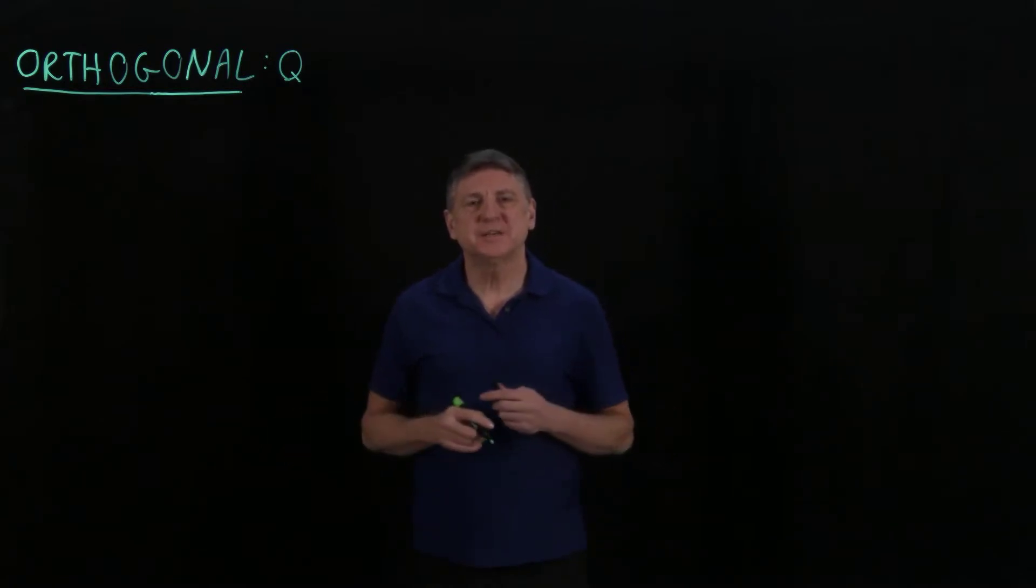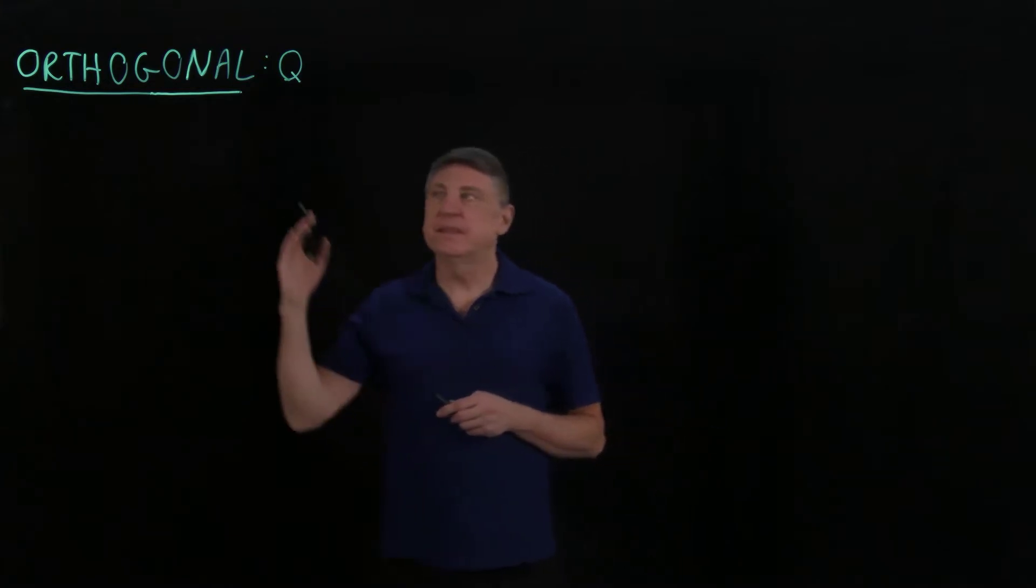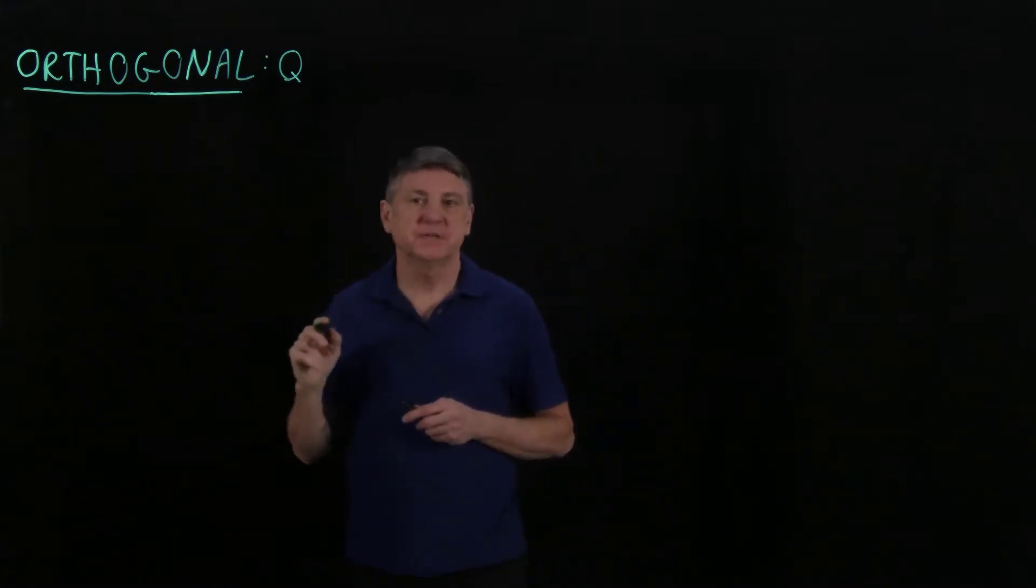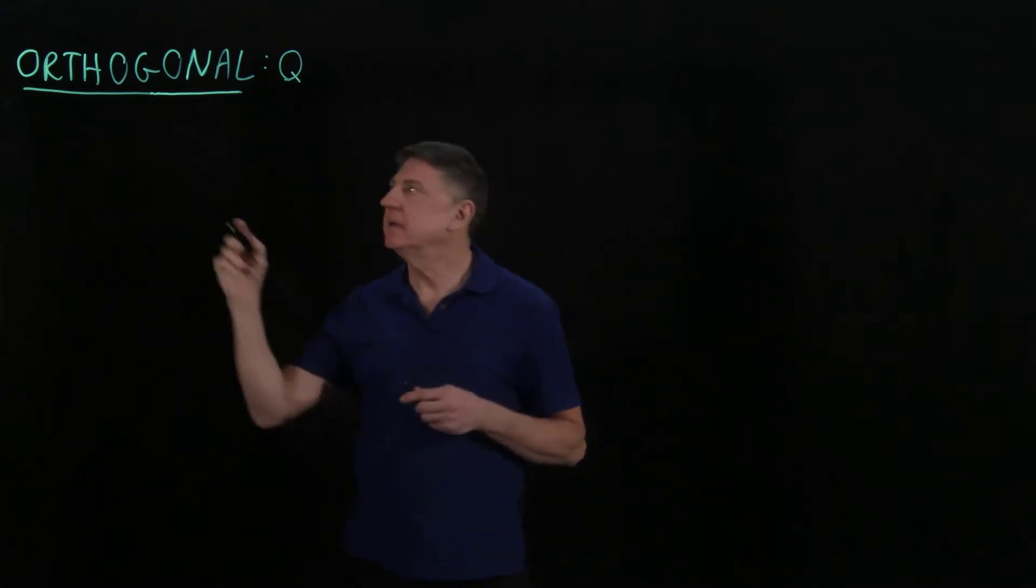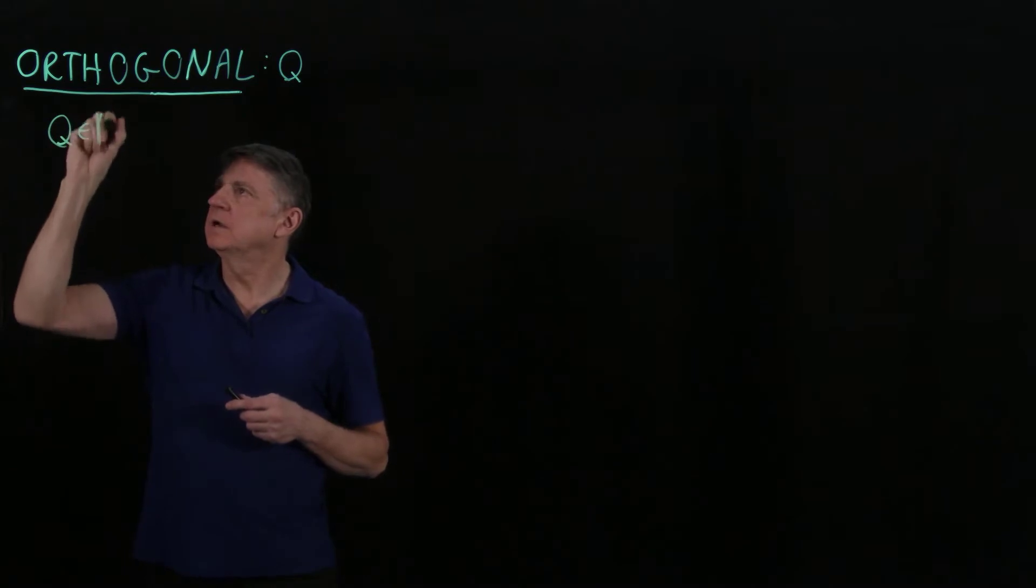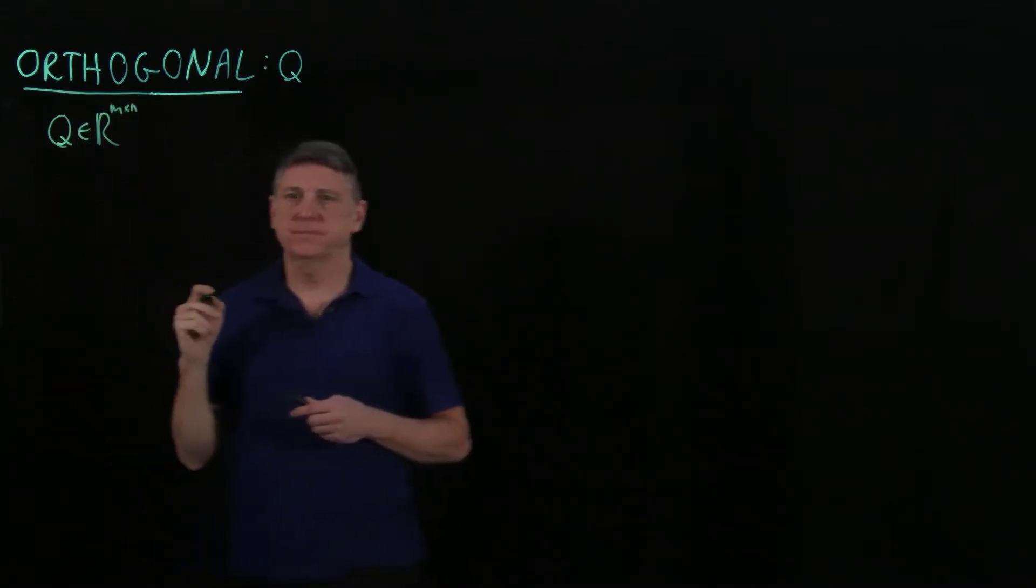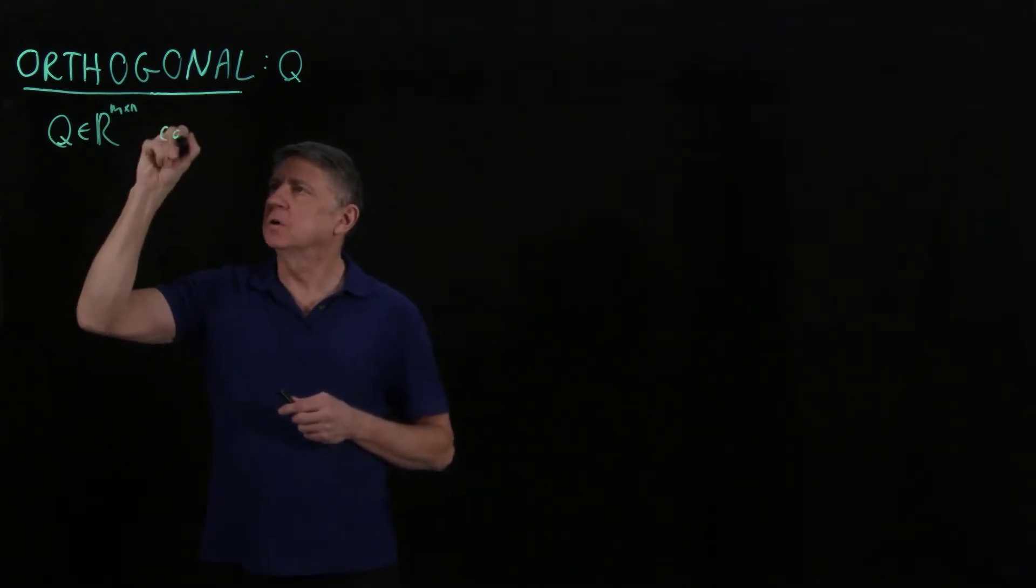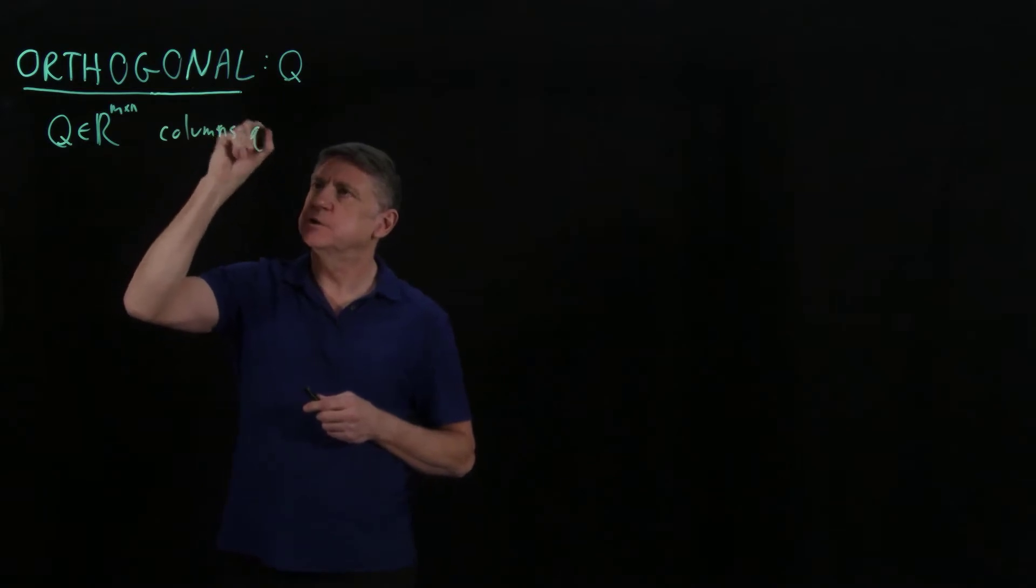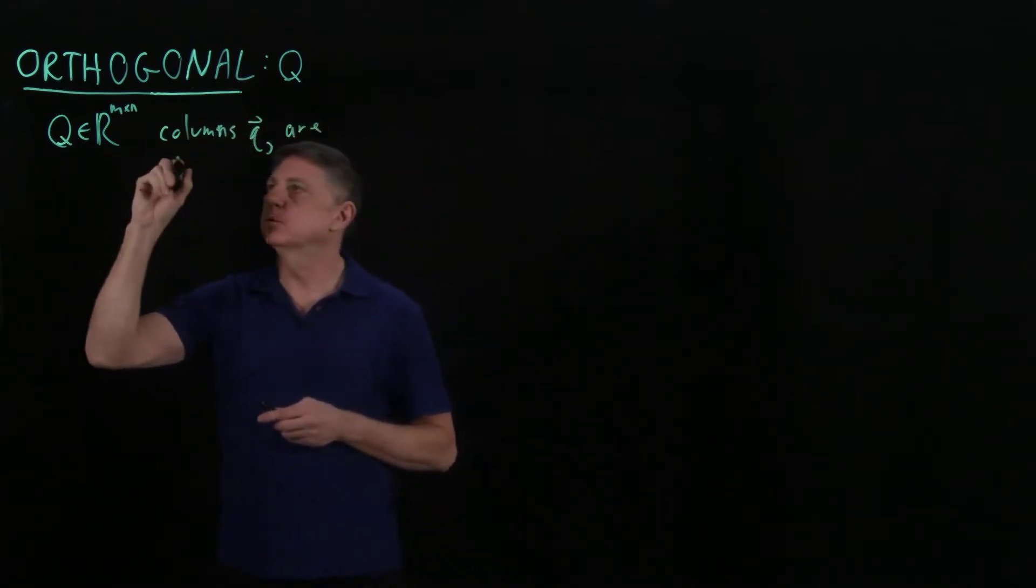Welcome. In this session on linear data analysis, we'll explore a normal matrix that is orthogonal, and we'll write this orthogonal matrix as Q. This matrix has m rows and n columns, and the columns of this matrix, which we can write as Qj, are orthonormal.